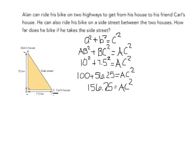Now if you remember back from earlier in the year, to get rid of this square on the AC, you're going to have to do the opposite of it. So you have to take the square root of both sides. So you're looking for the square root of 156.25, which I will tell you, if you were to put it in your calculator, you will get 12.5 kilometers equals the length of AC.